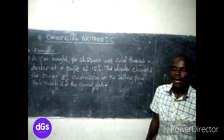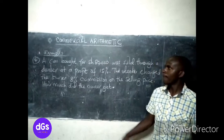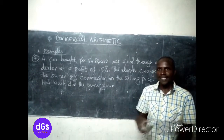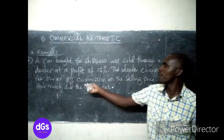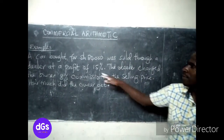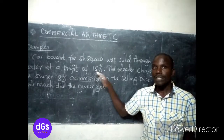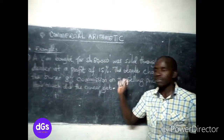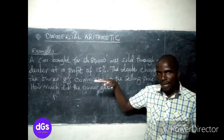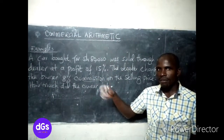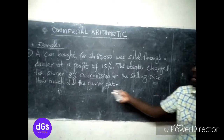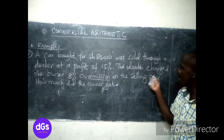In our fourth example, a car is being bought and sold at a profit. This involves percentage profit and also some commission. A car bought for 80,000 shillings was sold through a dealer at a profit of 15 percent. Remember, 80,000 is equivalent to 100 percent, so if the profit is 15 percent, the selling price will be 115 percent. The dealer charged the owner 8 percent commission on the selling price.